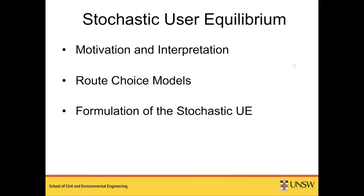Today, I'm going to cover the motivation and interpretation of a stochastic user equilibrium — why we need it and what it means. Then I'll talk about route choice models within the context of a stochastic user equilibrium, and we'll go over the formulation, how we can formulate a stochastic UE as an optimization problem, and then cover an example and solution algorithm.